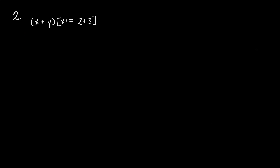In the next example, our expression E is X plus Y, and we're going to replace all occurrences of X with R, where R is Z plus 3. We look at the expression, find all occurrences of X, and replace with Z plus 3, giving (Z plus 3) plus Y. The parentheses are unnecessary here, so we can remove them to get Z plus 3 plus Y as the final result.